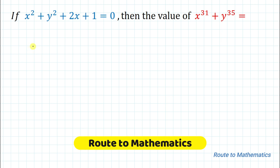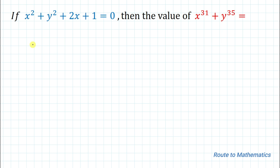Hello everyone, welcome to my channel Root to Mathematics. In this video we're going to solve an interesting algebraic question. The given question is: if x² + y² + 2x + 1 = 0, then the value of x to the power 31 plus y to the power 35 equals how much? So we need to find the value of this expression from the given equation. Let's start solving.